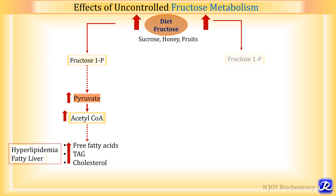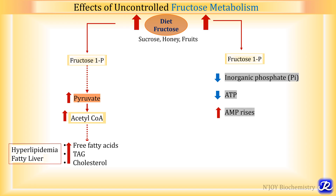The next consequence is increased fructose 1-phosphate — more phosphate gets utilized, meaning more inorganic phosphate is consumed. This leads to decreased inorganic phosphate in the body, and because of decreased inorganic phosphate there is decreased ATP, since formation of ATP requires inorganic phosphate. As the inorganic phosphate pool is decreased, there will be less formation of ATP.